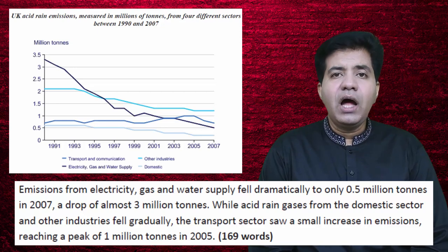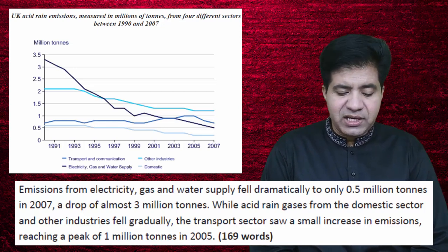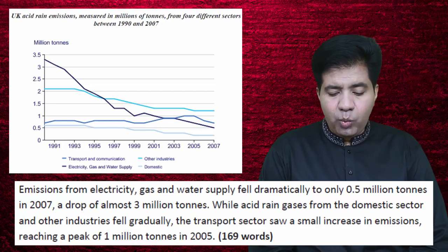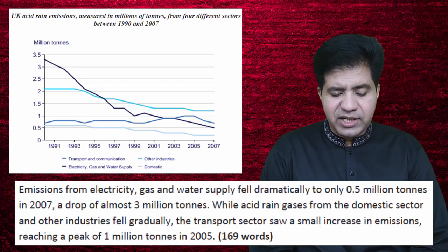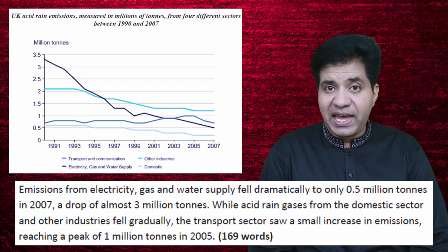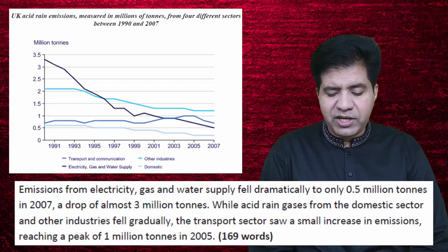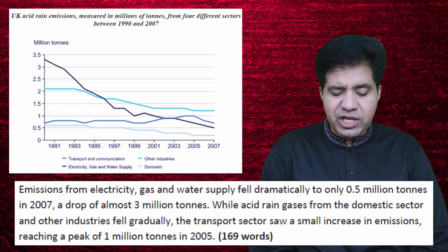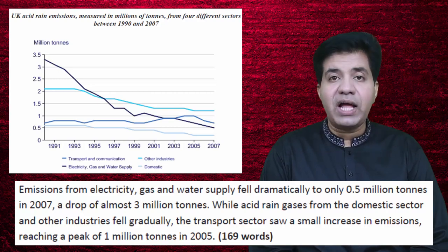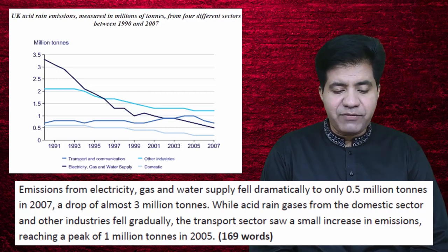In the last paragraph: emissions from electricity, gas and water supply fell dramatically to only 0.5 million tons in 2007 — a drop of almost 3 million tons — while acid rain gases from the domestic sector and other industries fell gradually. The transport sector saw a small increase in emissions, reaching a peak of 1 million tons in 2005.